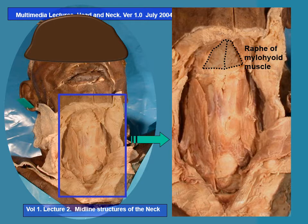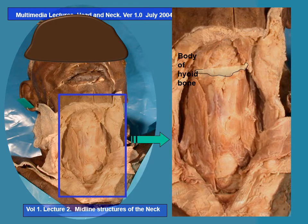The mylohyoid muscle ends in the hyoid bone. As a result, the next structure for discussion is the body of the hyoid bone. The hyoid bone is a very important structure in this series of midline structures. When you trace the body of the hyoid bone laterally, we move into the greater horn of the hyoid bone. The tip of the greater horn is a rough guide to the origin of the lingual artery from the external carotid, making it a very important bony landmark.